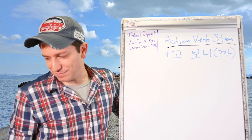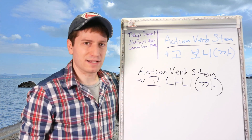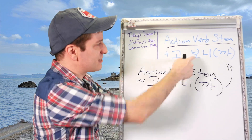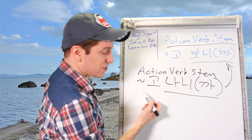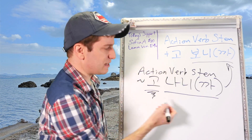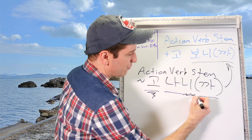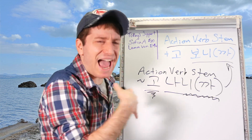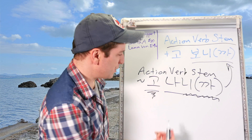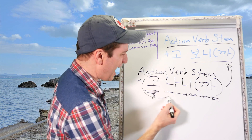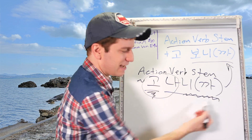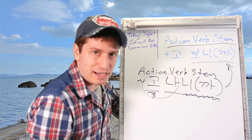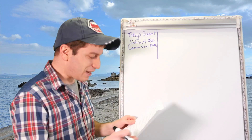One more thing: there is another form, 고 나니까. It has a very similar usage to 고 보니까 — it also means 'after doing something, I realized.' The 나 simply emphasizes that something is after, so it has a stronger feeling of 'after doing something, I realized.' But the usage is the same as 보니까. Just keep that in mind if you see it.